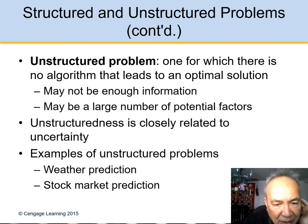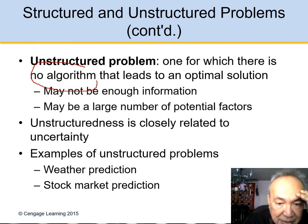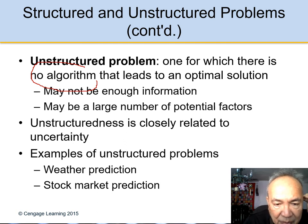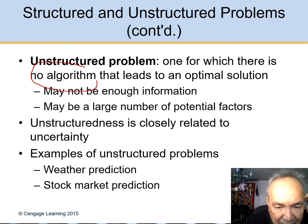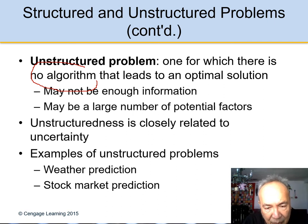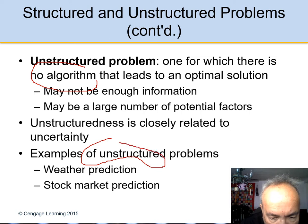An unstructured problem is one for which there is no algorithm yet discovered that leads to an optimal solution. There may not be enough information or there may be too many potential factors. Unstructured problems are closely related to uncertainty. Examples of unstructured problems include weather prediction and stock market prediction.